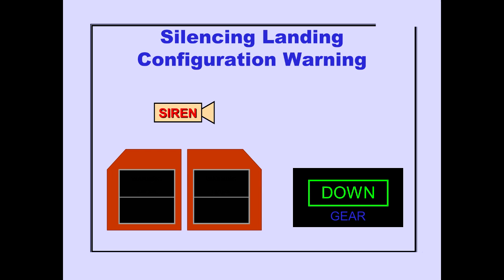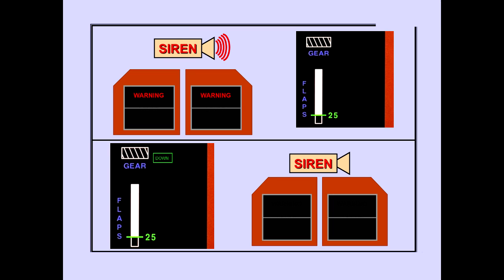If the cause of the landing configuration warning is low radio altitude with a low thrust setting, pushing either master warning caution reset switch or extending the gear silences the siren and extinguishes the master warning lights. If the cause is selection of landing flaps with the gear not down, the gear must be extended to deactivate the warning. Pushing a master warning caution reset switch in this case will not silence the siren.